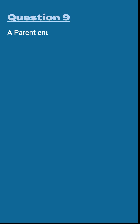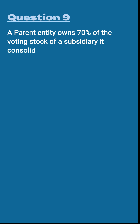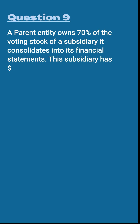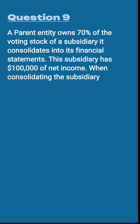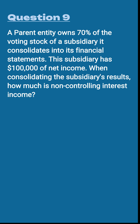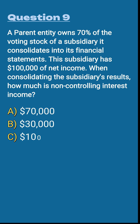Question number nine. A parent entity owns 70% of the voting stock of a subsidiary it consolidates into its financial statements. This subsidiary has $100,000 of net income. When consolidating the subsidiary's results, how much is non-controlling interest income? A. $70,000. B. $30,000. C. $100,000. Or D. Zero.